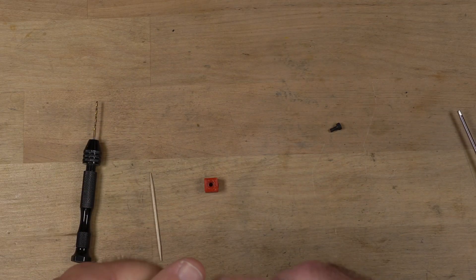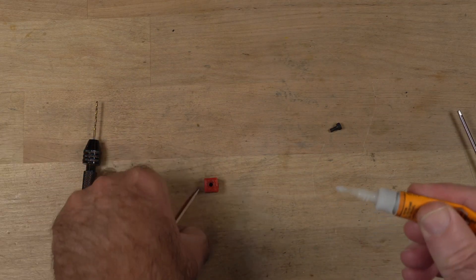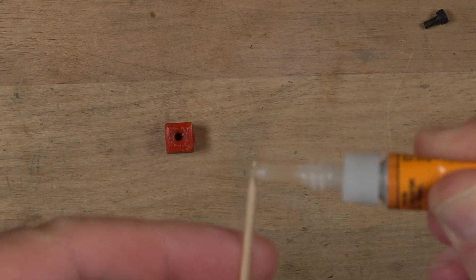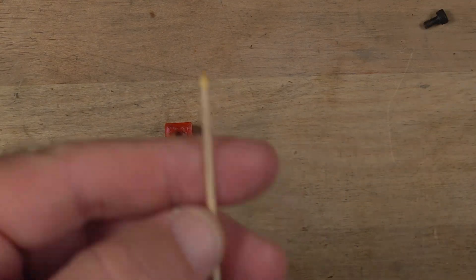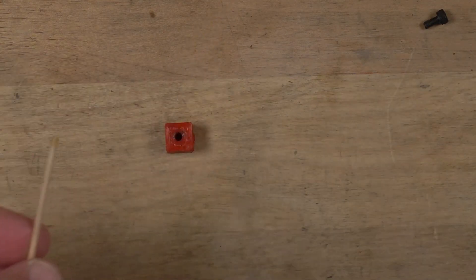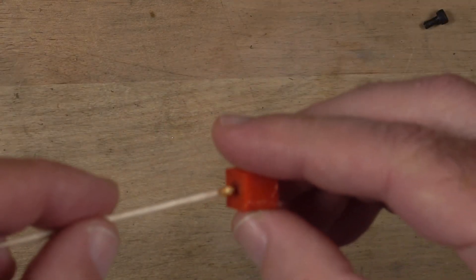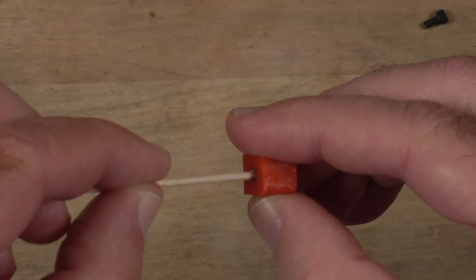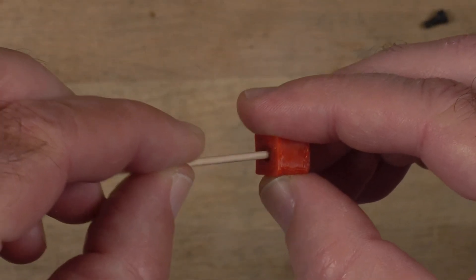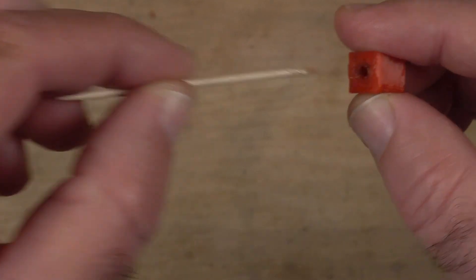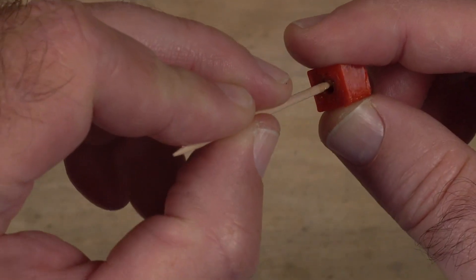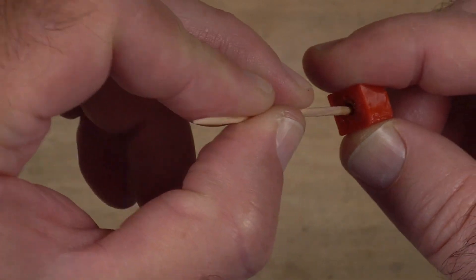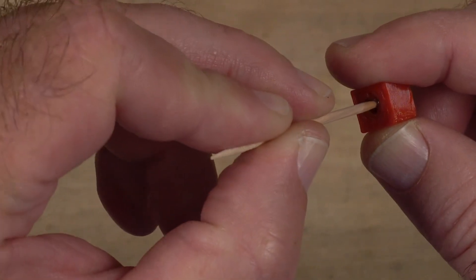First we get some Gorilla Glue, put it on the end there of the toothpick, and then we put it inside the hole and we just run it around like that. You don't have to get too much in there because the advantage of Gorilla Glue is that it expands quite a bit. Okay, so I've got the inside of those threads coated real well.